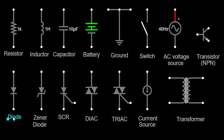The diode's symbol features a triangle pointing toward a vertical line. Diodes allow current to flow in one direction while blocking it in the opposite direction. They are used for rectification, signal demodulation, and voltage regulation purposes.